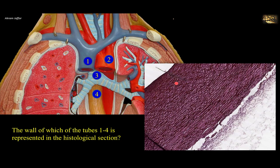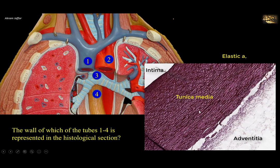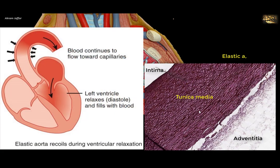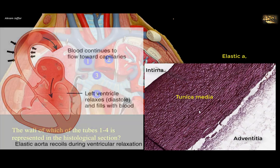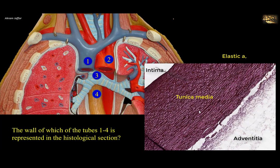The histological section shows the wall of an elastic artery with tunica intima, tunica media whose entire thickness contains elastic fibers, and tunica adventitia. Some smooth muscle cells and collagen fibers are also present in the tunica media. In elastic arteries, elastic laminae predominate to provide elastic recoil during diastole, damping the pulsatile flow resulting from intermittent contraction of the heart. Such structure is present in the largest blood vessels, for example the pulmonary trunk and the aorta and its main branches.